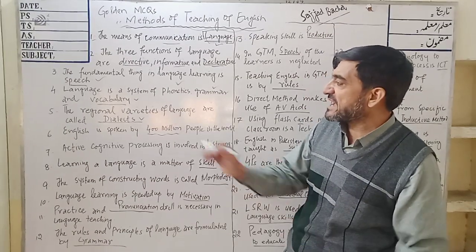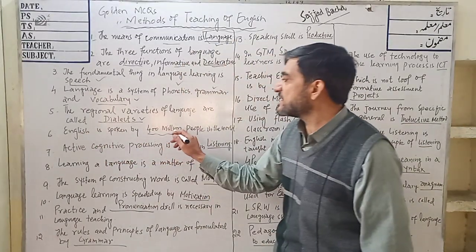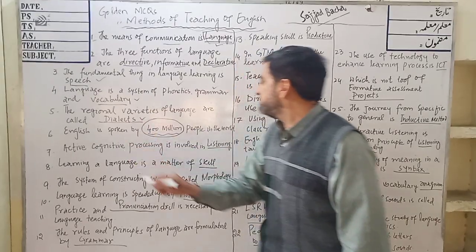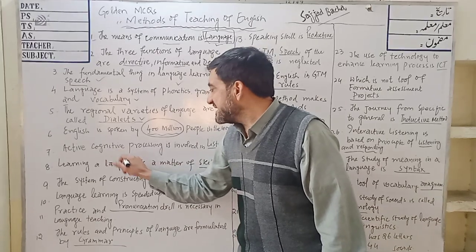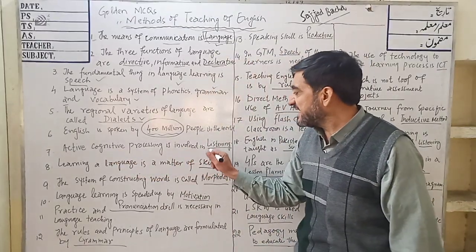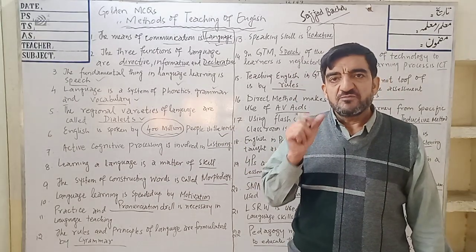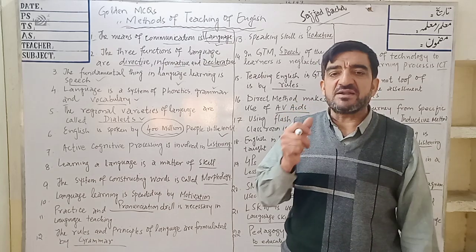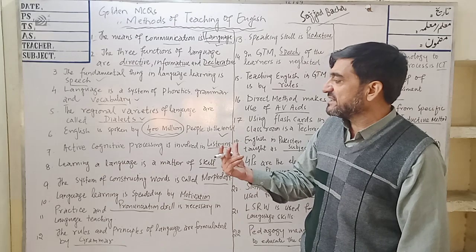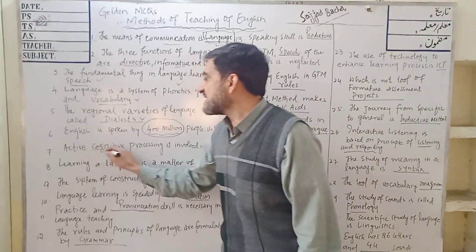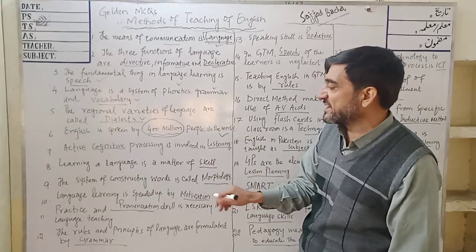Regional varieties of language are also known as dialects. MCQ 6: English is spoken by 400 million people in the world. MCQ 7: Active cognitive processing is involved in listening. Listening is the foremost and most important language skill. MCQ 8: Listening in which cognition — meaning the use of mind — is not involved, that listening is non-productive.